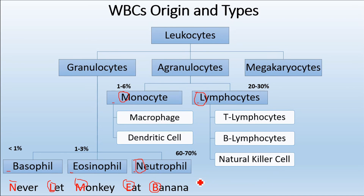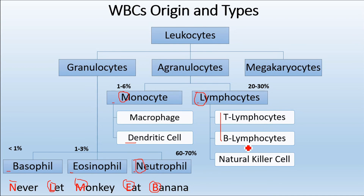Neutrophils are the most abundant WBCs. Regarding T and B lymphocytes — dendritic cells connect the two immune systems, and T and B cells are part of what is known as the adaptive immune system. These cells are further subdivided into additional categories. To memorize the subtypes of T lymphocytes and B lymphocytes, we use another mnemonic.